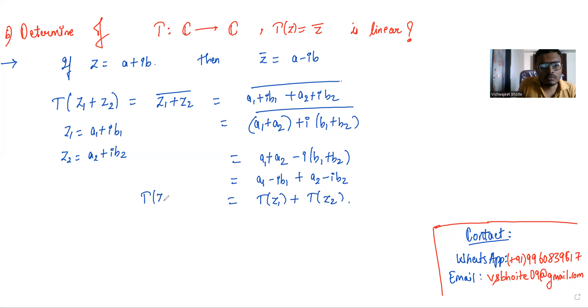We have T of z1 plus z2 equals T of z1 plus T of z2. Let's call this property a.